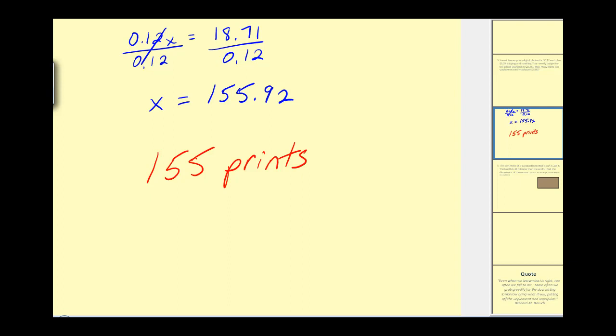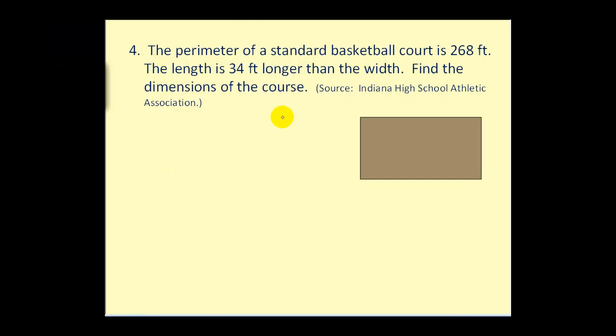Let's go ahead and take a look at one more question. The perimeter of a standard basketball court is 268 feet. The length is 34 feet longer than the width. So that's key. We need to express this relationship. So this is 34 feet longer than this. So if we let this equal x, this would have to be x plus 34. And of course, the opposite sides are equal.